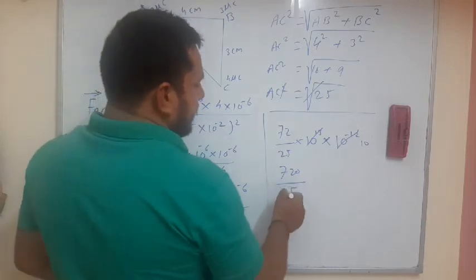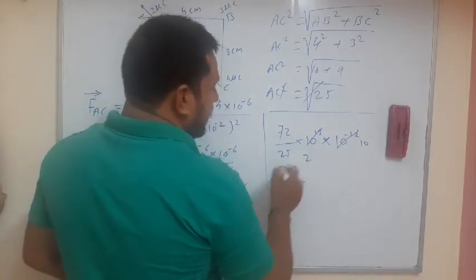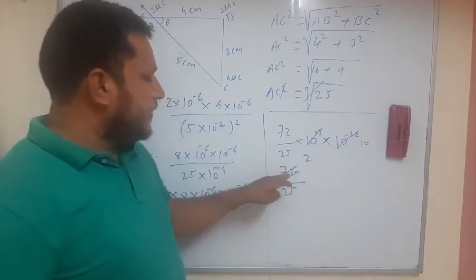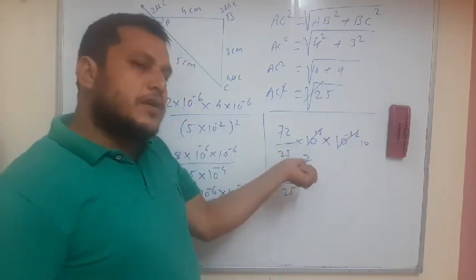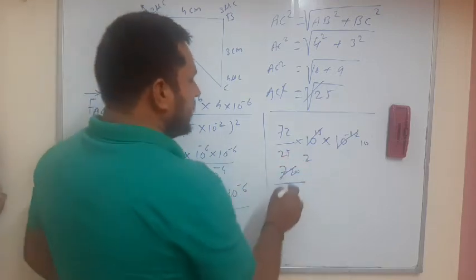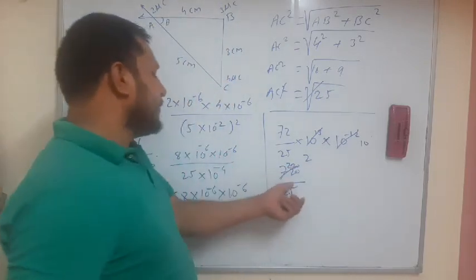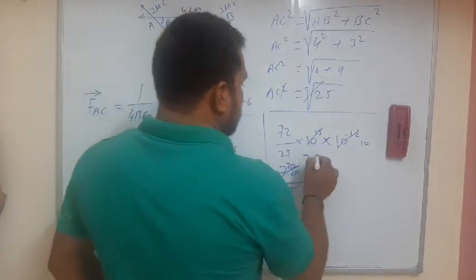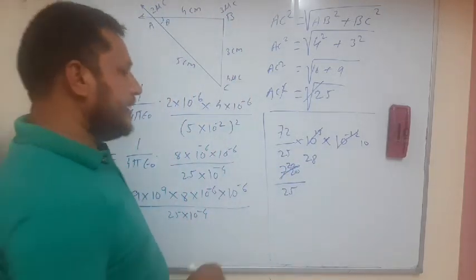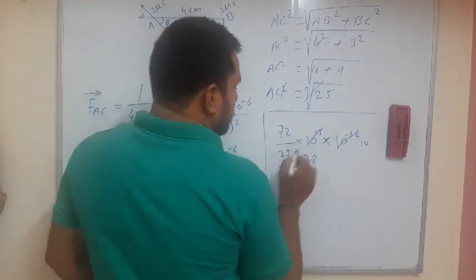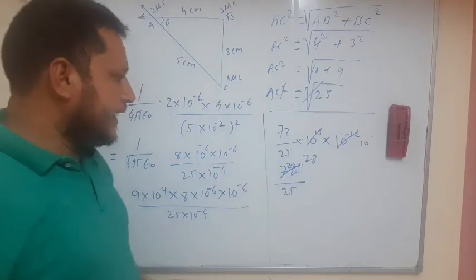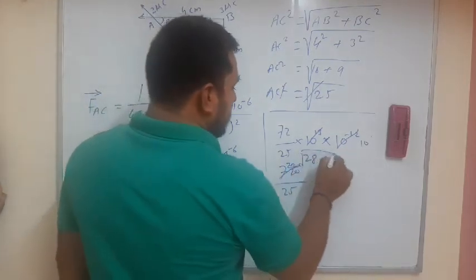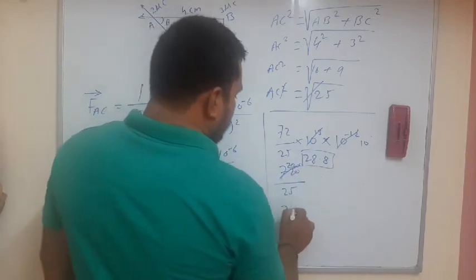Now just divide it. 25 into 720. 25 times 2 is 50. Now we are having the remainder is what? 72 minus 50 that is what? 22. And this is 0. It becomes 220. Then 25, 8 times, 200. Now the remainder is what? 20. Put the point here and it becomes 200. Again 25, 8 times, 200. So this is our final answer. That is what? 28.8.